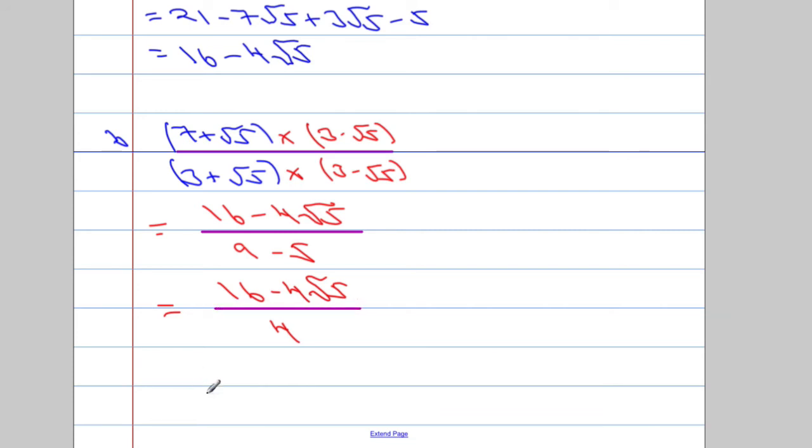And then, finally, what we need to do, A and B have to be integers, that means they're positive or negative whole numbers. So what we can do is we can actually cancel the 4 into the 16 and the 4 here, and that leaves us with 4 minus root 5.